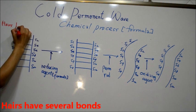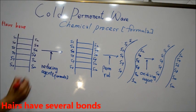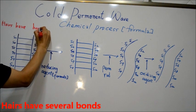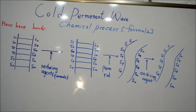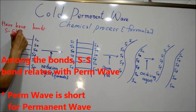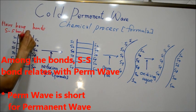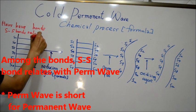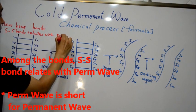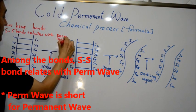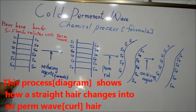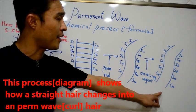First, hair has bonds - S-S bonds - that we react with perm solution. This process shows how straight hair changes to perm hair.